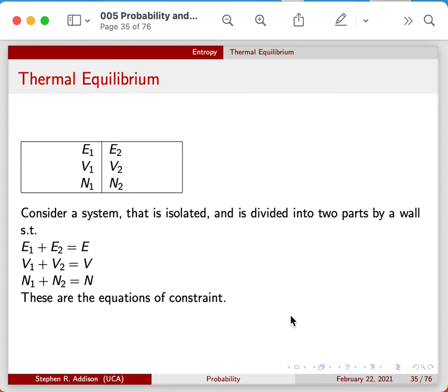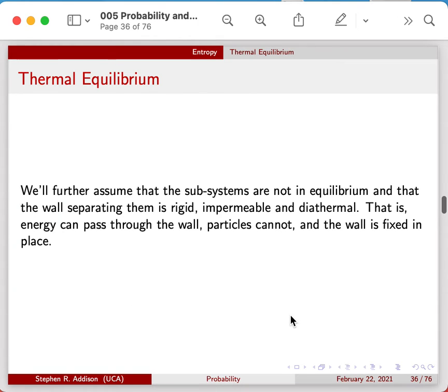So these are called equations of constraint. We'll assume that the subsystems aren't in equilibrium, and we'll assume that the wall separating them to begin with is rigid, impermeable, and diathermal. What that means is energy can pass through it, the particles can't pass through it, and the wall is fixed in place.